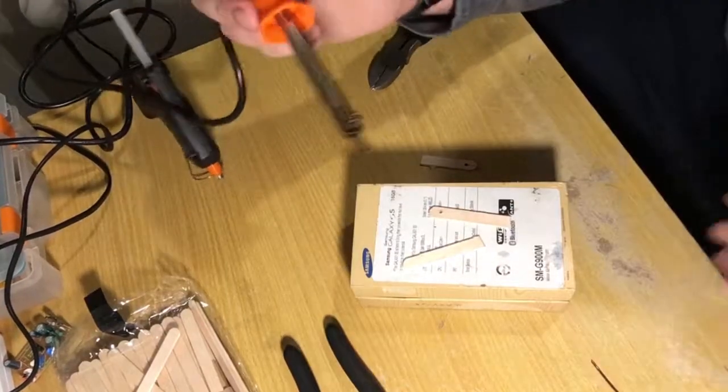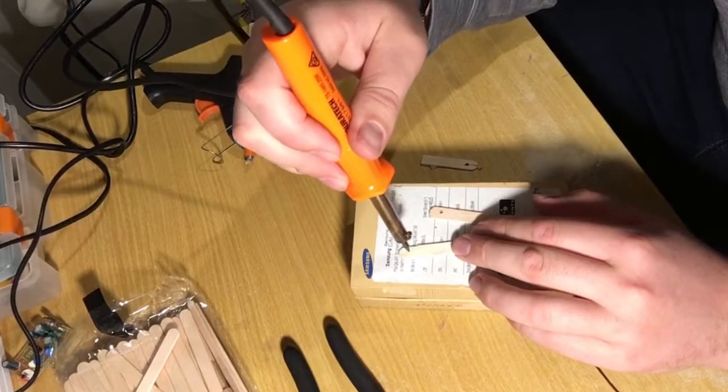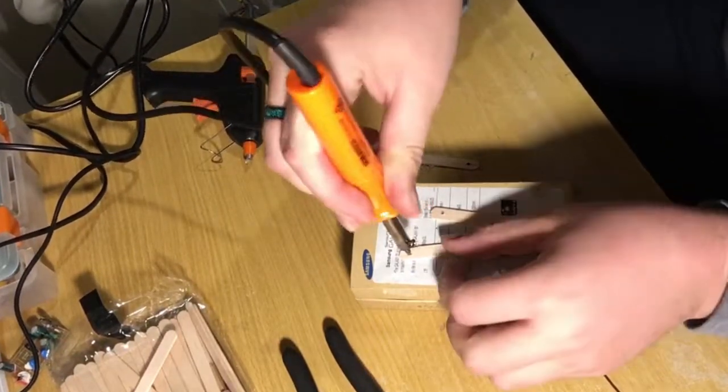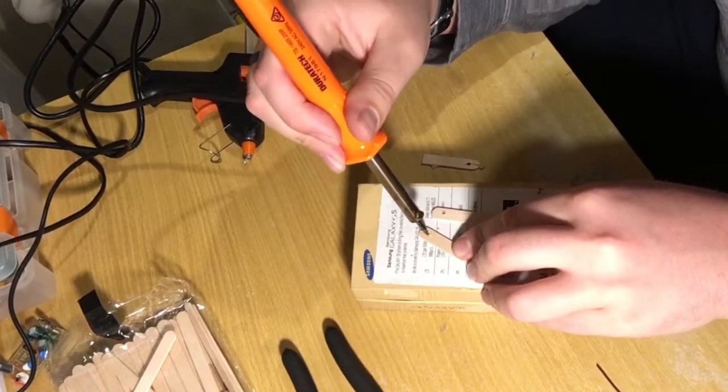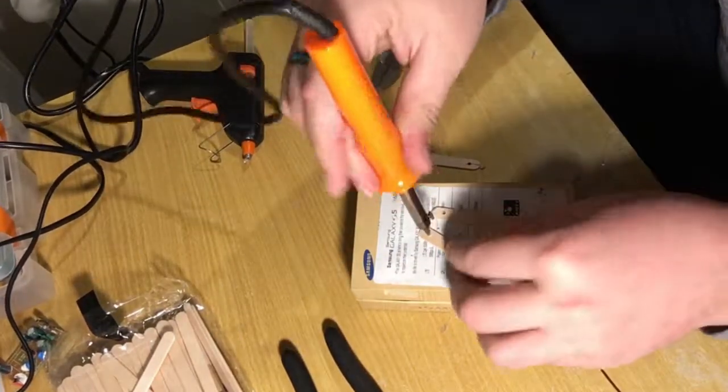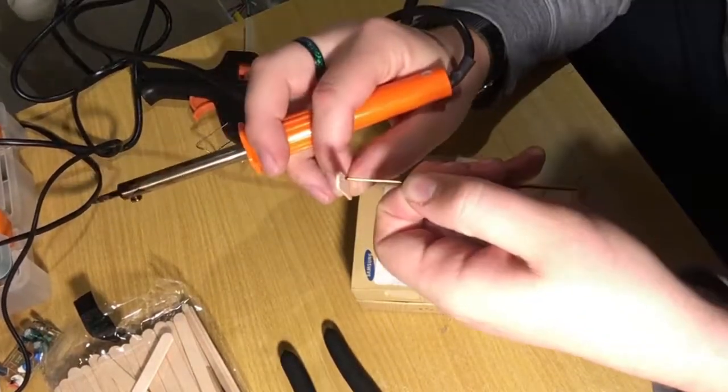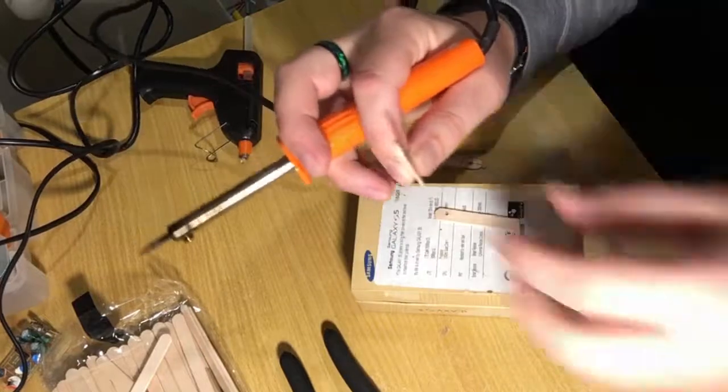If you have a drill, use a drill, or else you can kind of burn a hole through the sticks using a soldering iron. And you'll want to make it so that your wire is going to fit through there.